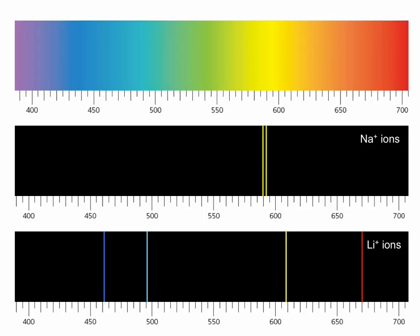Here we have an example of what we would see on a spectroscopy output for both sodium ions (Na+) and lithium ions (Li+). We can see that their spectra are very different. We would then be able to compare these to a reference spectra to work out if sodium or lithium ions were present in our mixture. You will look at far more examples of instrumental analysis at A-level or IB.